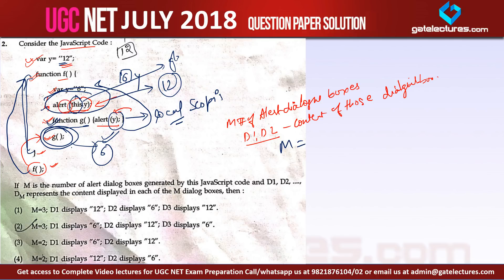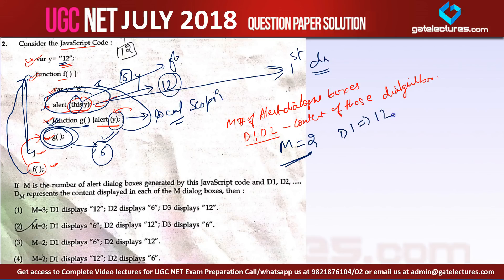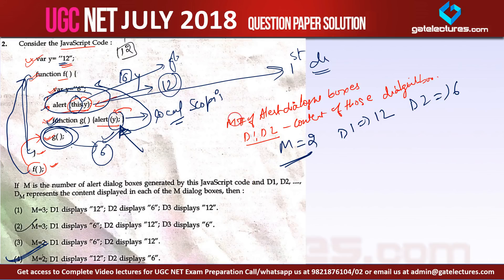We are executing the alert statement only two times, so the number of dialog boxes shown is 2. The first dialog box uses this keyword so its content will be 12, and the second dialog box content will be 6. So for this question the correct answer is option number 4, which shows m is equal to 2 and displays 12 and 6. Comment in the comment box whether you got the correct answer or the wrong answer for this question.